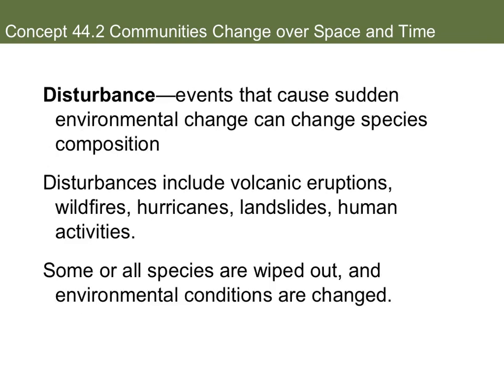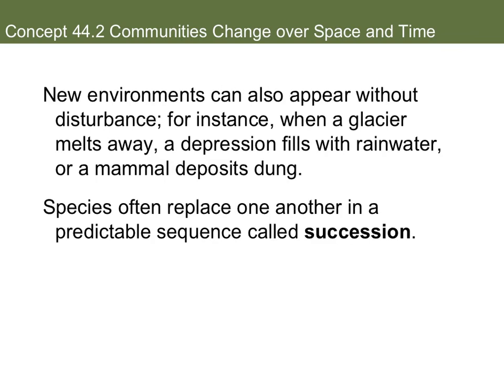A disturbance is an event that causes a sudden environmental change and can change species composition. Disturbances include volcanic eruptions, wildfires, hurricanes, landslides, and human activities. Some or all species are wiped out and environmental conditions are changed — again, you change the structure, you change the function. New environments can also appear without disturbance; for example, when a glacier melts away, a depression fills with rainwater, or a mammal deposits dung, creating a new environment.